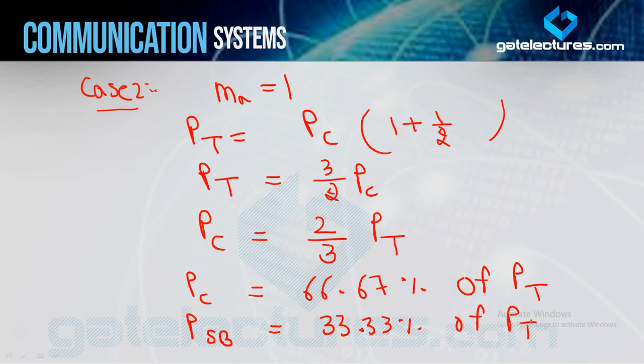We are using 66.67% of power to send the carrier term — which we don't even need to send! The carrier term is unwanted; the sideband terms carry the message signal. So 66.67% power is wasted on the carrier, which is a major disadvantage of basic double sideband with full carrier AM, which we will overcome in future modulation techniques.